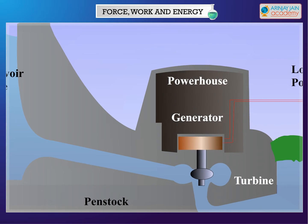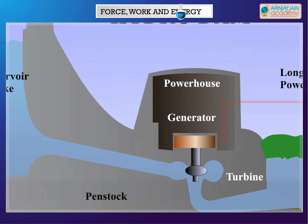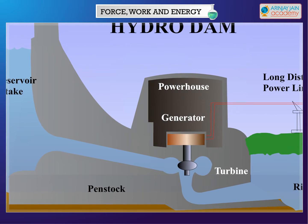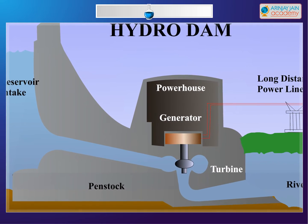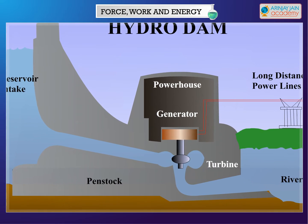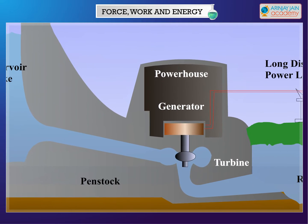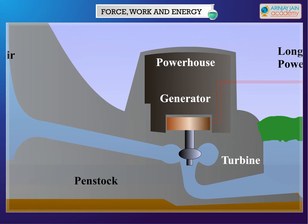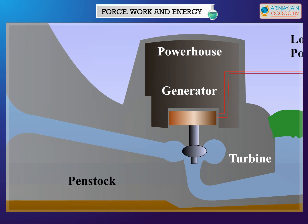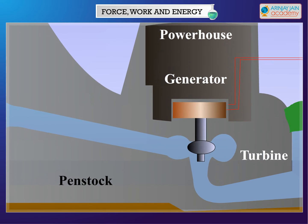Water. Moving water has a lot of energy called hydro energy. Dams use the force of fast-flowing water to generate electricity. The water falls from a great height into turbines and moves the blades. The turbine in turn is attached to machines that produce electricity.